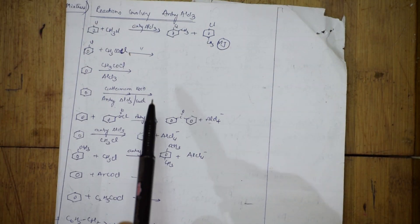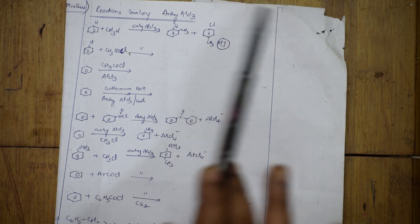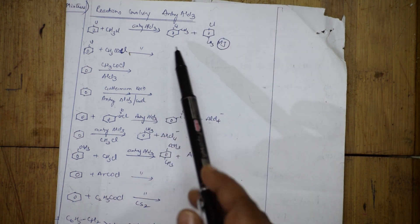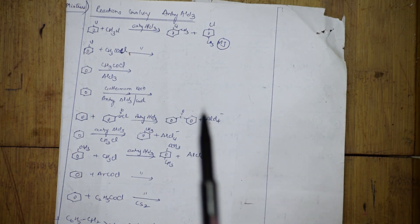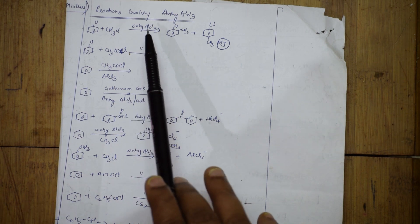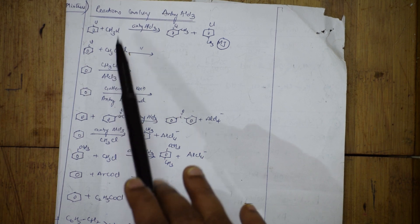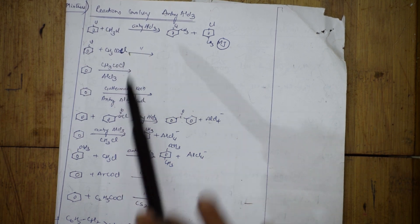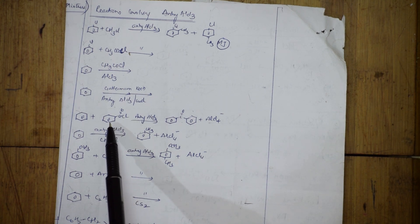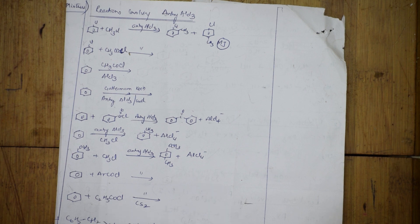Now let's look at the next set of reactions involving anhydrous AlCl₃, which is a Lewis acid. I've listed all reactions from your textbook. Anhydrous AlCl₃ is used in the Gattermann-Koch reaction. Whenever you have anhydrous AlCl₃, there are essentially three combinations: methyl chloride (CH₃Cl), acetyl chloride (CH₃COCl), or benzoyl chloride (PhCOCl) with an aromatic ring.